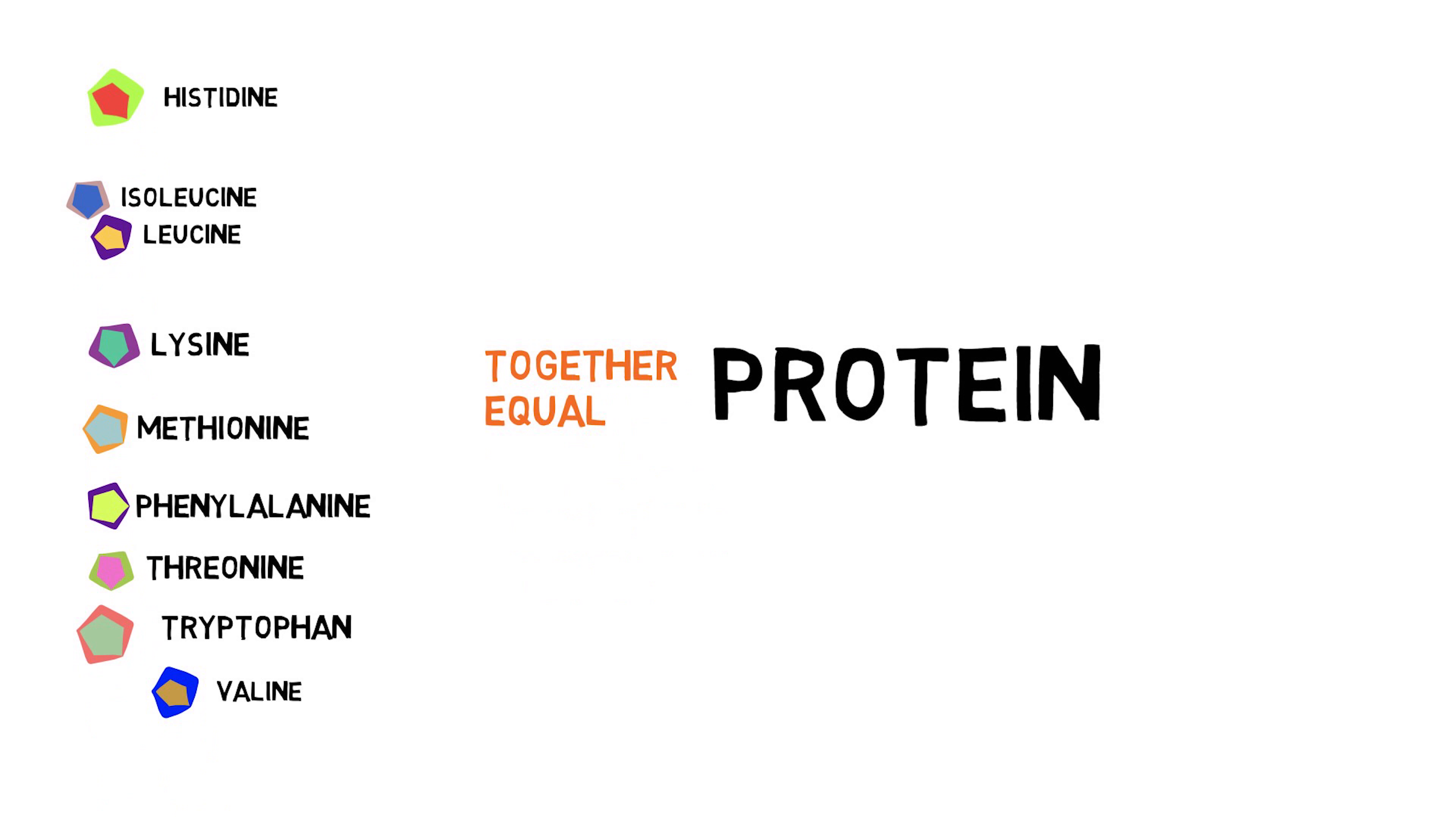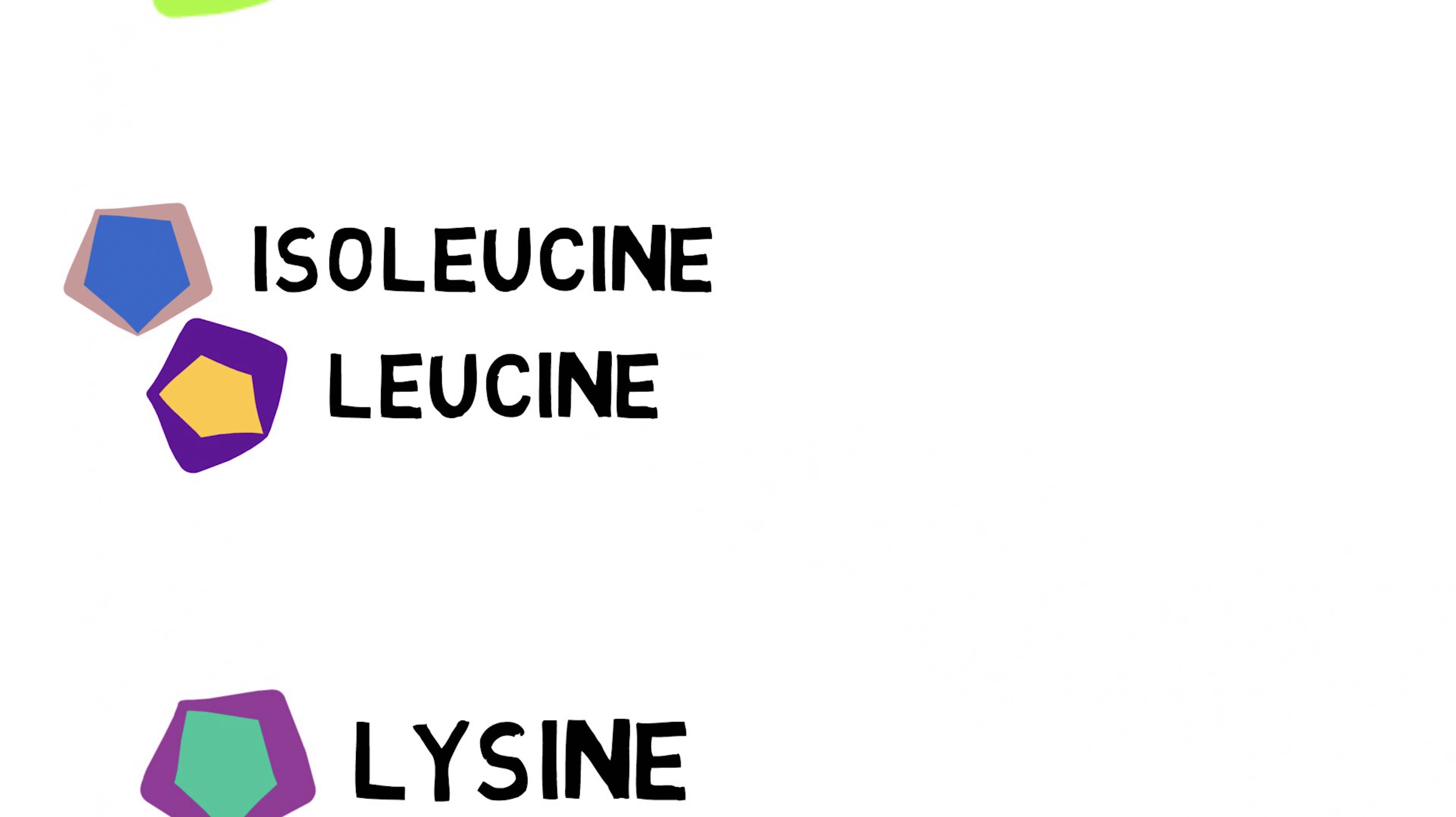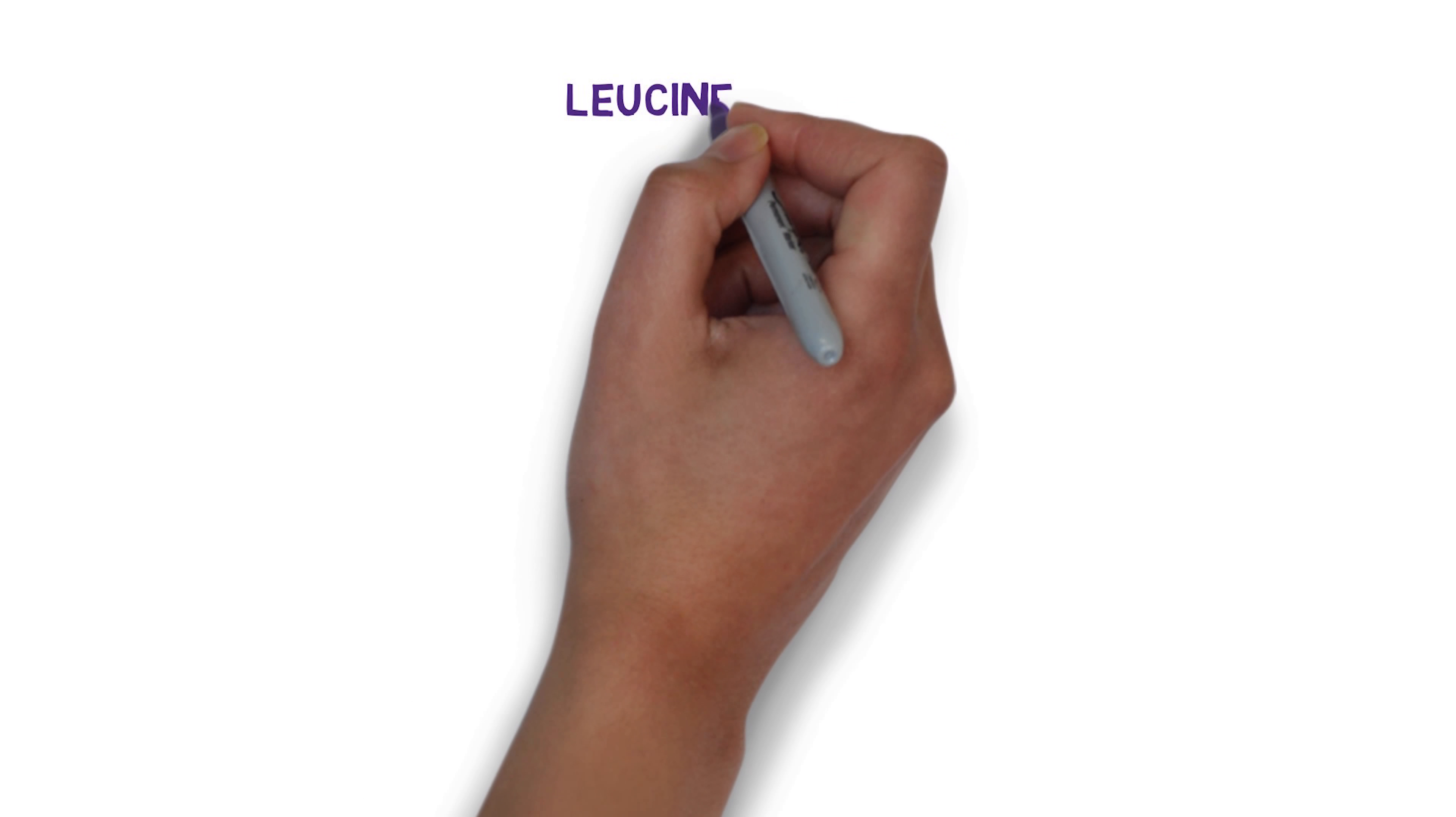Remember how I mentioned protein is comprised of various amino acids? Well, these amino acids all have different functions in the body. It also happens that whey is very high in a specific one, leucine, which is one of the three primary BCAAs. This is big because leucine is one of the primary amino acids responsible for triggering muscle protein synthesis, which is the building of muscle. I've actually already made a whole video on leucine, which I'll link to if you're interested in learning more.